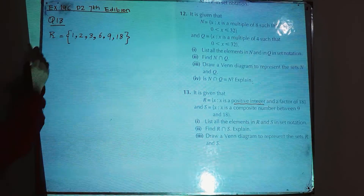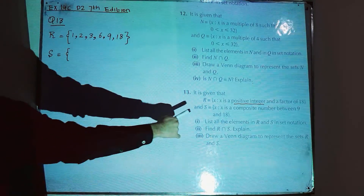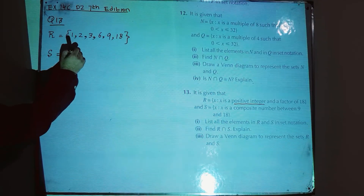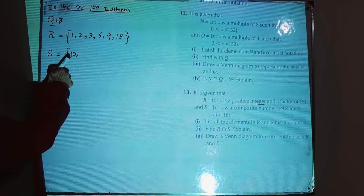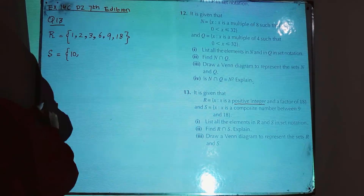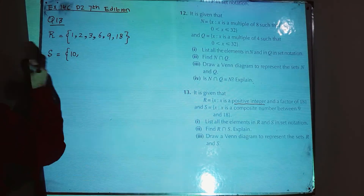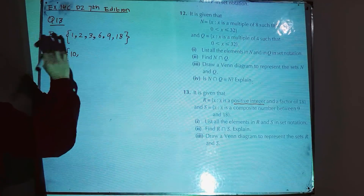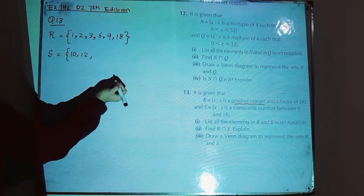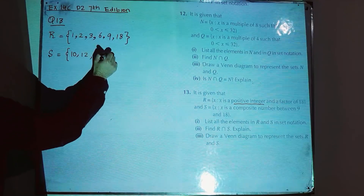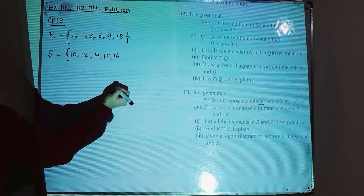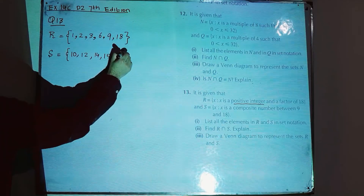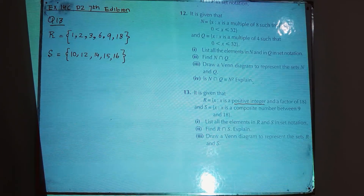Set S contains composite numbers between 9 and 18. A composite number is one having more than 2 factors. Checking: 10 is composite, 11 is prime, 12 is composite, 13 is prime, 14 is composite, 15 is composite, 16 is composite, 17 is not composite. So S = {10, 12, 14, 15, 16}.